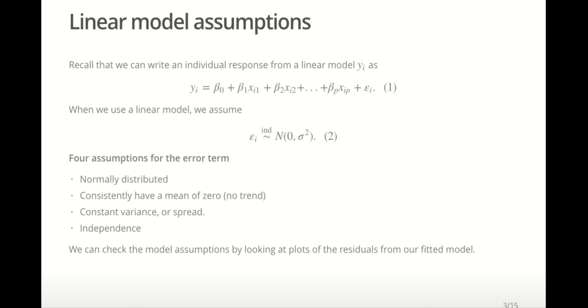This is really four different assumptions about the error term: Normal distribution, consistent mean of 0, that is, no trend in the error, which means linearity in the model. Constant variance or spread, which is also called homoscedasticity. And independence.